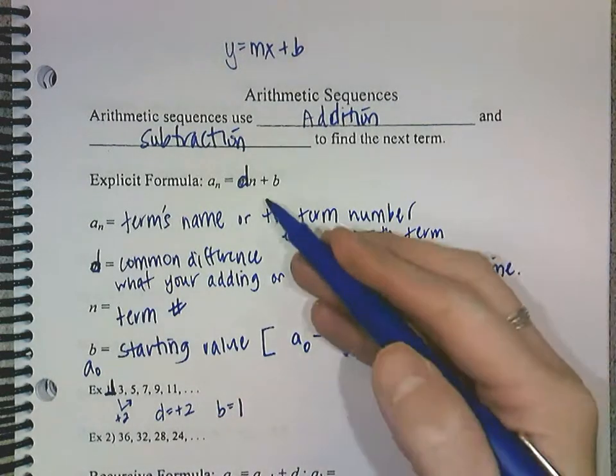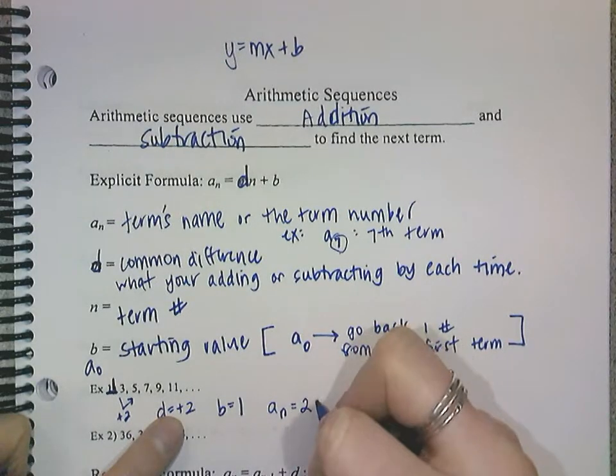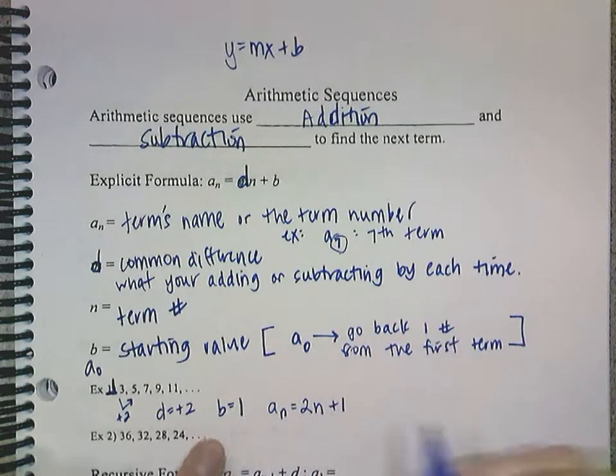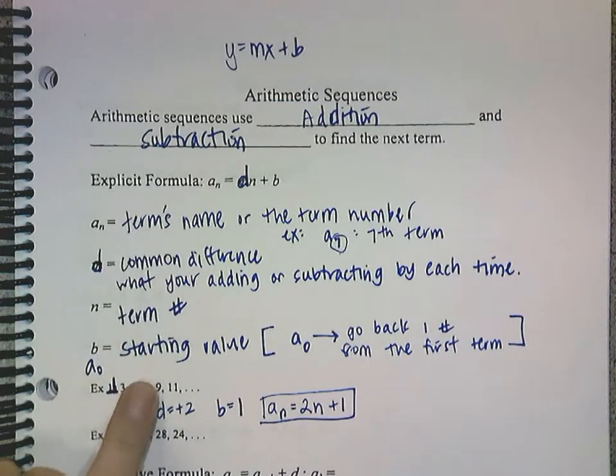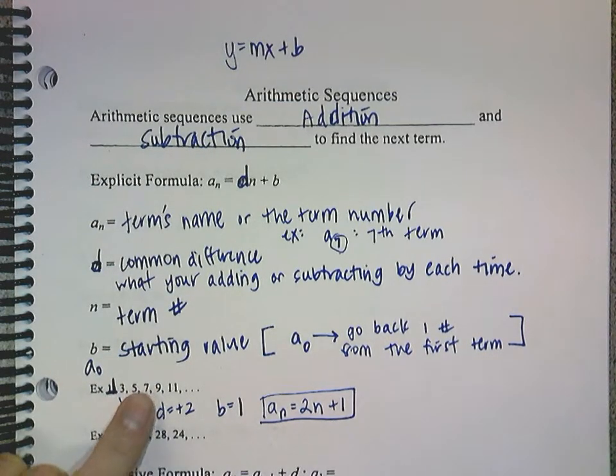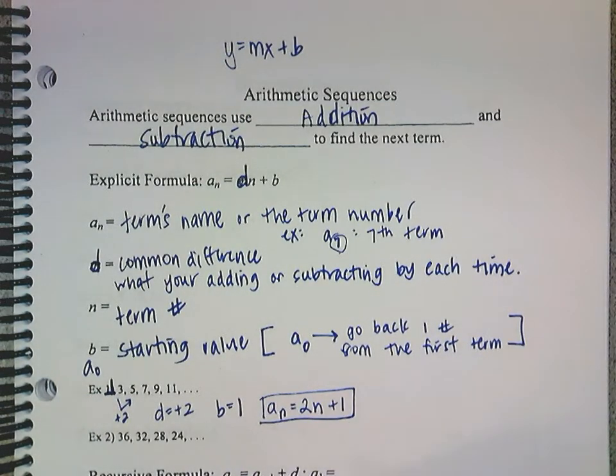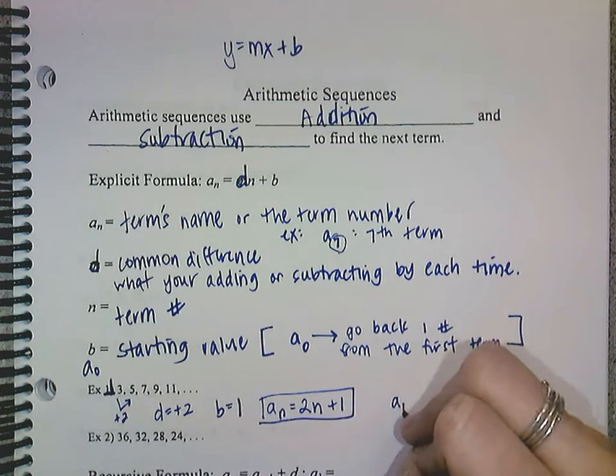Then I'm going to put those two pieces of information together to make my formula. So a sub n is equal to my d value, which is 2. And then I always put an n after it, and then I'm going to add my b, which is 1. So this is my formula. It's my explicit formula for this sequence. But we're going to keep going, because a lot of times we want you to find a term. So we can use this formula to figure out what the 15th or 1,000th or 50th or 100th term is. It makes it really nice instead of having to write out all of the sequence and then counting which ones we have.